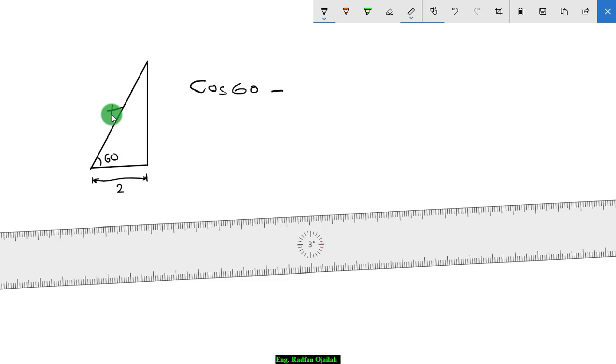Sin 60 equals 2 over x, that means x equals 4. We use this number to find the height: sin 60 equals x over 4. X in this case means this side, so x equals 3.464 meters, and that's it.